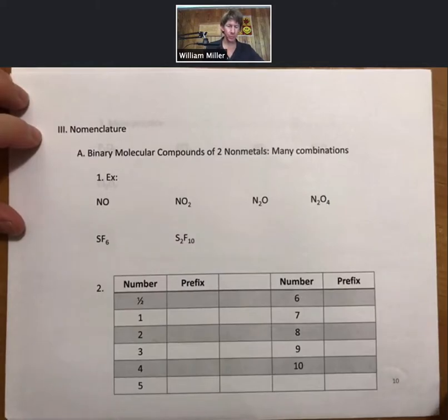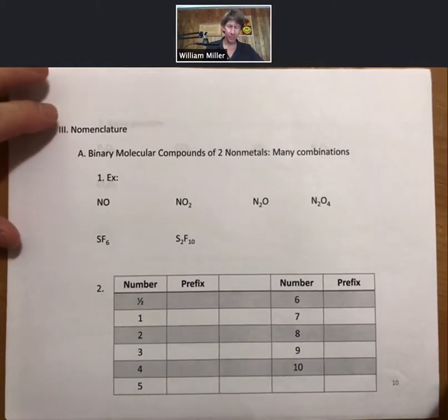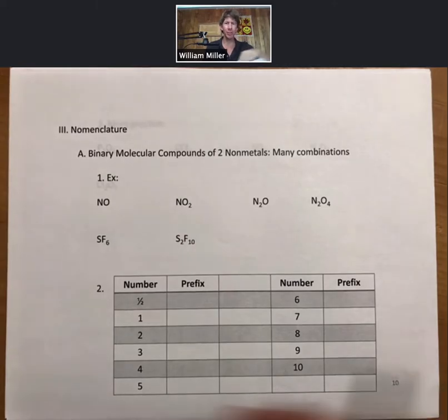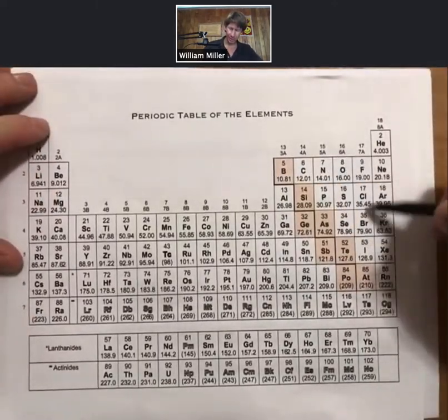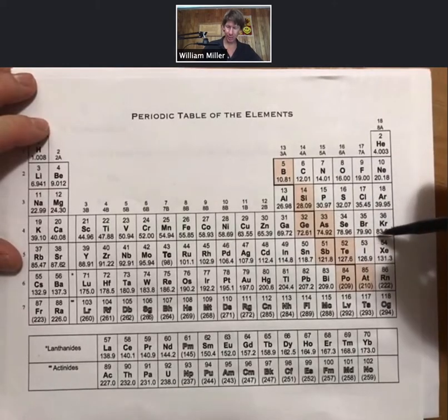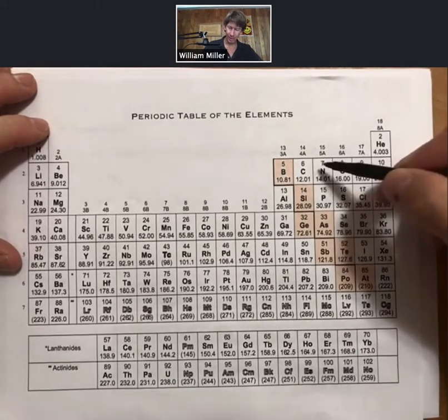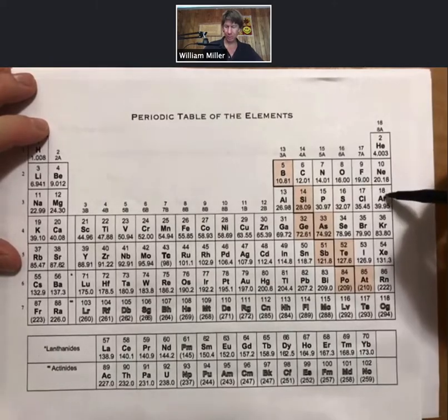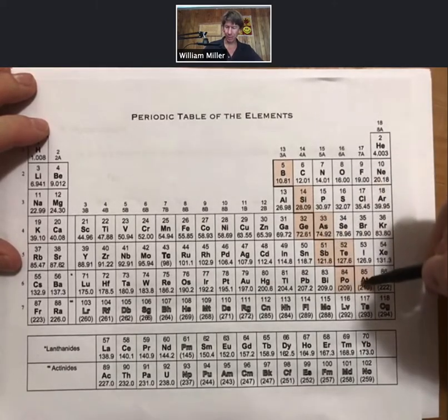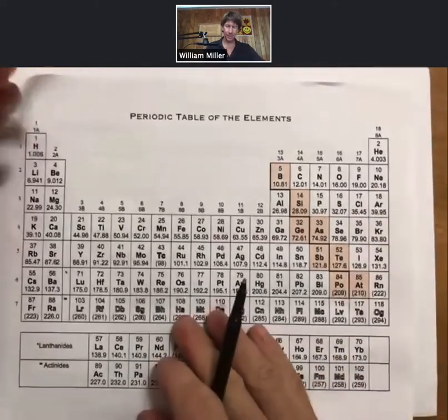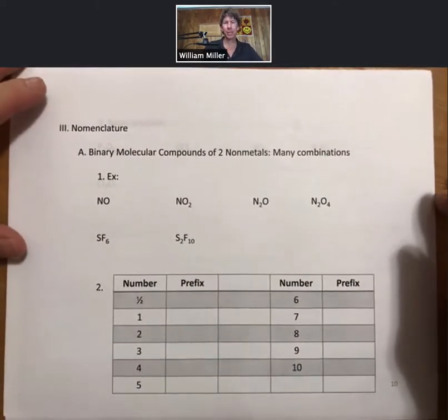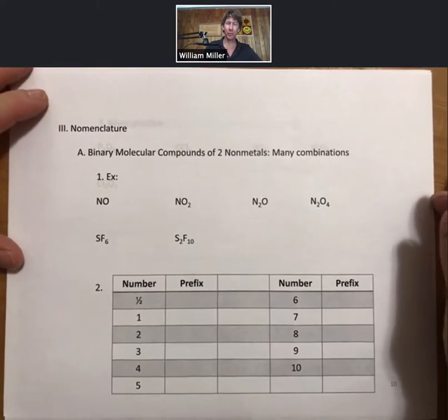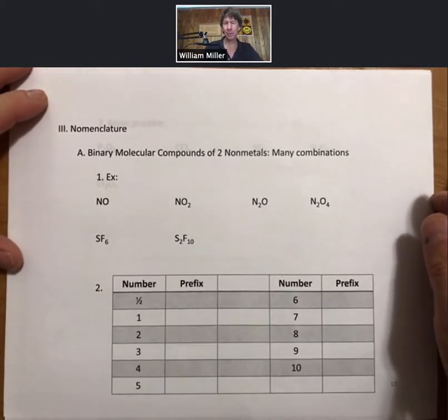With nomenclature, let's talk about binary molecular compounds of two non-metals. Non-metals are these elements in the upper right portion of the periodic table, including all the ones to the right of the metalloids colored in lines here. It turns out that these are going to be the covalent compounds as well, meaning they will have covalent bonds and form molecules with those covalent bonds. There are many possible combinations.